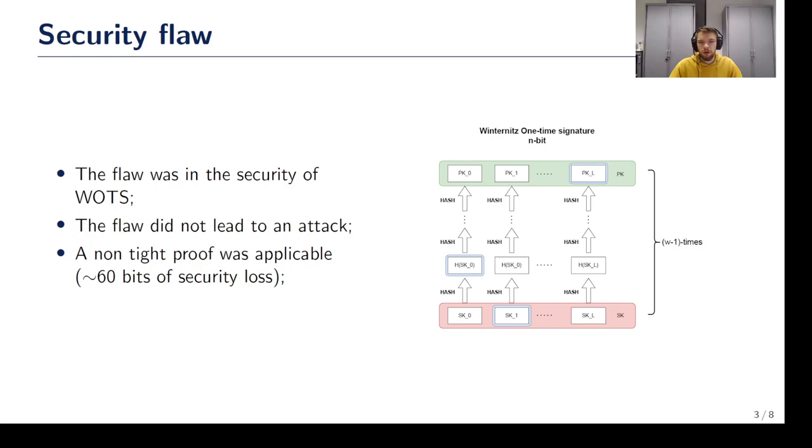In Sphinx+, WOTS is used to sign some internal parts of the scheme. So the key observation that helps to fix the proof is that the adversary has no control over those internal parts. So we could prove the security of WOTS in a weaker model. This model forces the adversary to make signature queries before he gets the public key.